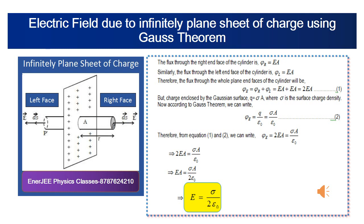Gauss theorem gives a relationship between the total flux passing through any closed surface and the net charge enclosed within that surface. By the exact definition from the book, the Gauss theorem states that the total flux through any closed surface is 1 by epsilon-naught times the total charge enclosed by that closed surface.